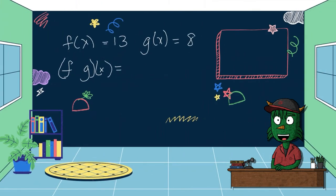This one we've got multiplication. Notice how there's nothing between the f and the g. So that's f(x) times g(x). So that's 13 times 8, which we figured out before was 104.